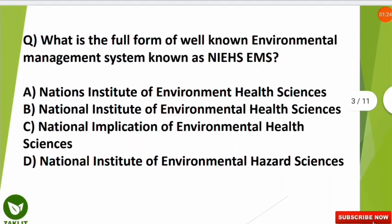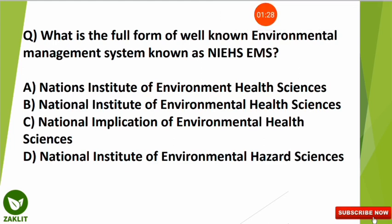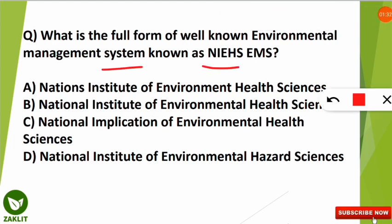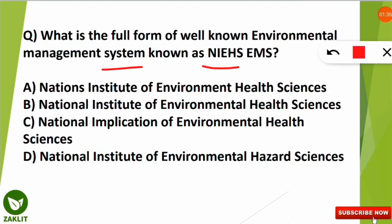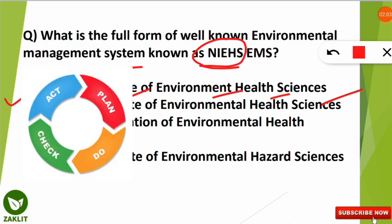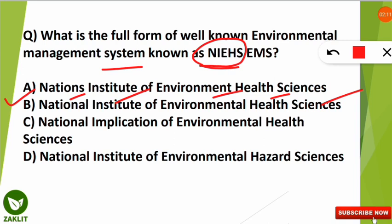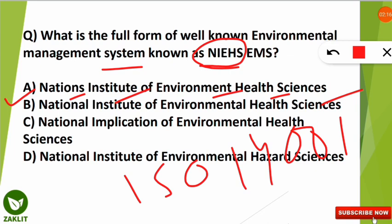The next question is: what is the correct full form of the well-known environmental management system known as NIEHS? The correct option is B. The full form of NIEHS is National Institute of Environmental Health Sciences, an institute located in the USA. It follows the same plan used by other EMS frameworks: Plan, Do, Check and Act. This Plan-Do-Check-Act process is provided by the ISO 14001 Environmental Management System standard.